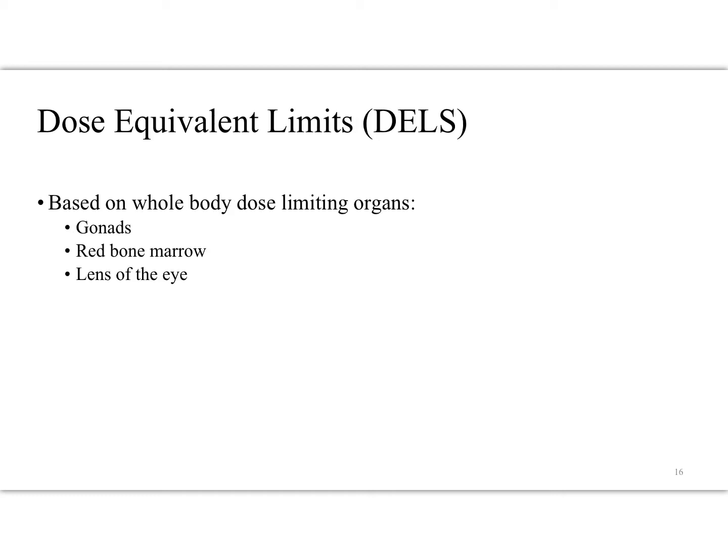The NCRP and others have come up with dose equivalent limits based on whole body dose-limiting organs — for example, the gonads, the red bone marrow, and the lens of the eyes. In fact, most OSL dose reports are given as lens of the eyes and a deep tissue dose, just for this purpose.